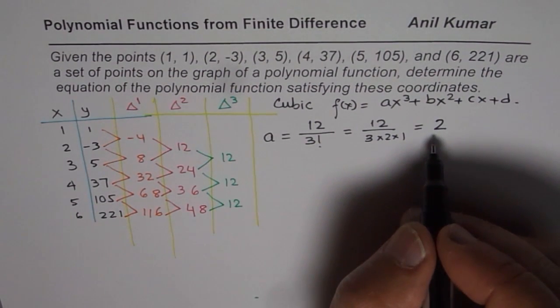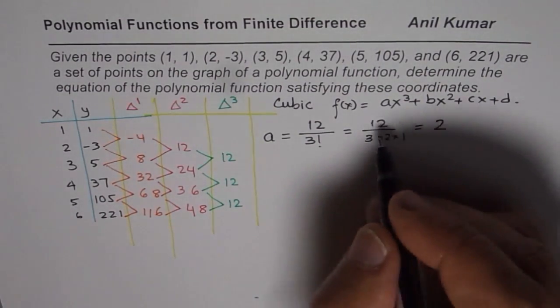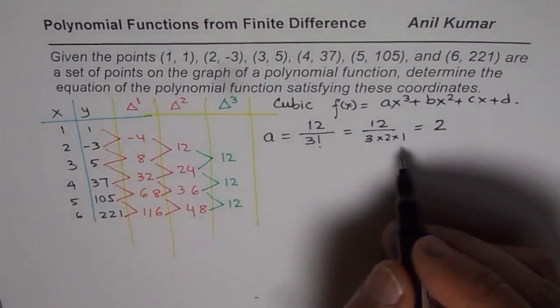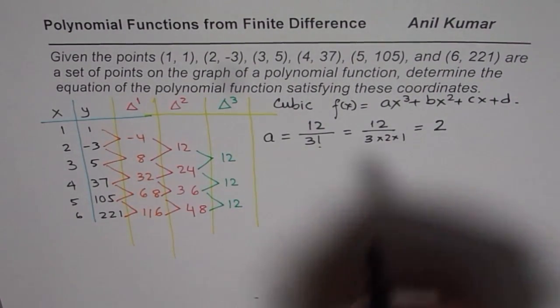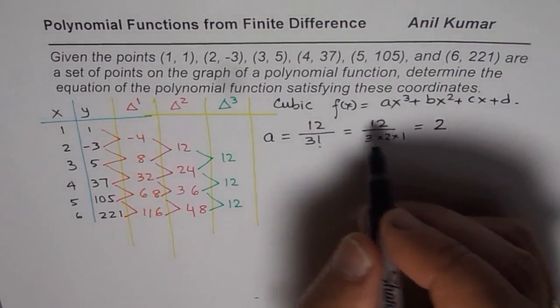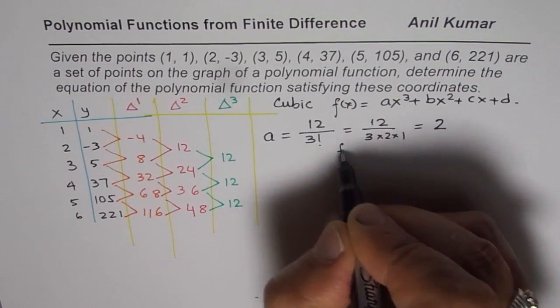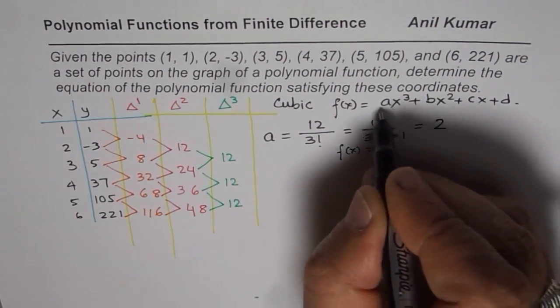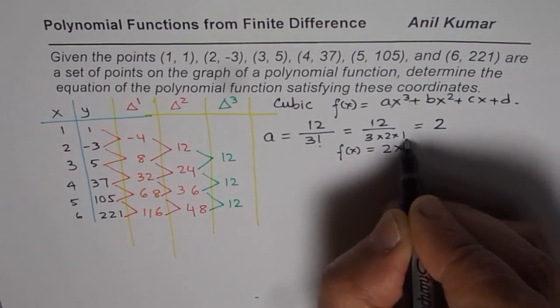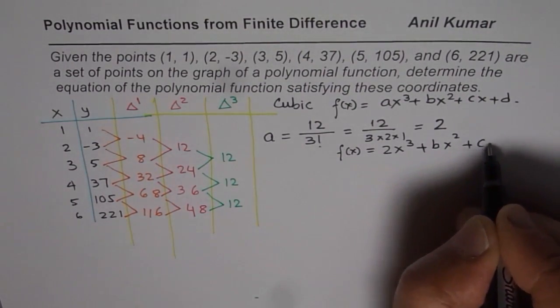Now since a is 2, we can actually substitute 2 in this equation. So if I substitute 2 in this equation and then find other equations, then it will be much simpler for us to work with. So now we are working with an equation which is f(x) equals 2x³ + bx² + cx + d.